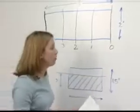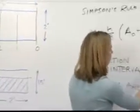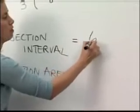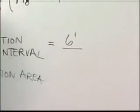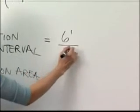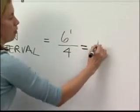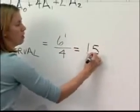Okay, to come up with the section interval, what you're going to do is divide the length of your vessel, which in this case is six feet, by the number of intervals. In this case, we have four intervals. So six divided by four gives you a spacing of one and a half feet.